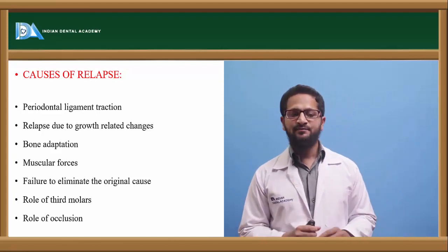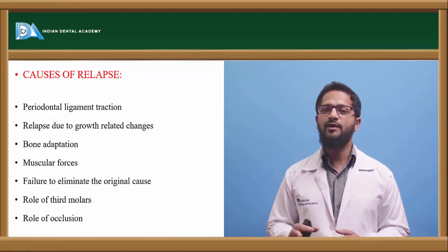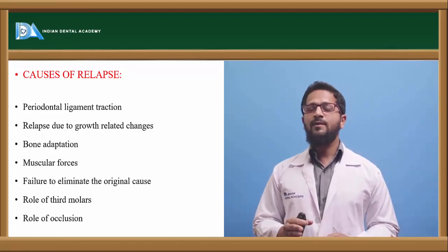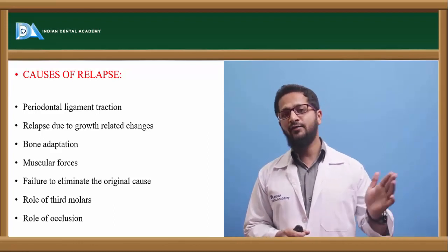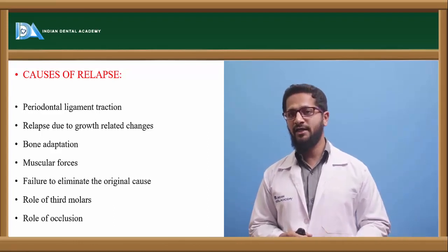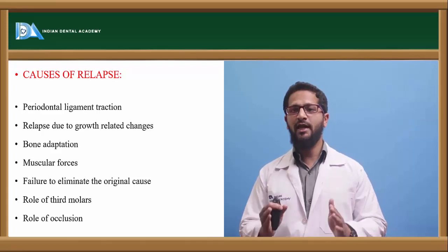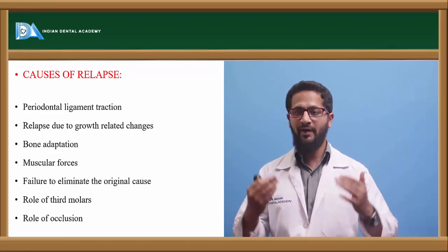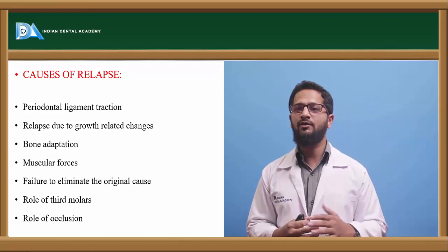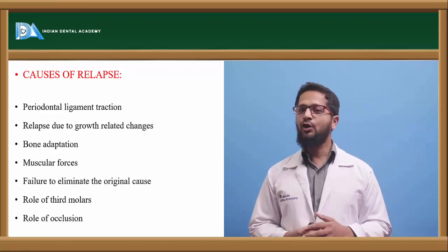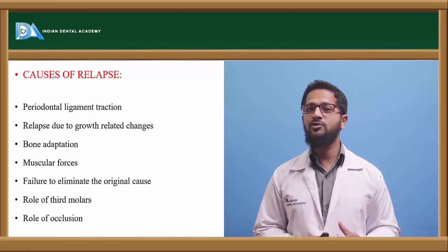The sixth cause is the role of third molars. Third molars generally erupt between 18 to 21 years of age. If orthodontic treatment is completed before their eruption and they then erupt, they push the teeth in an anterior direction, resulting in crowding or relapse.